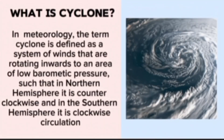What is a cyclone? In meteorology, the term cyclone is defined as a system of winds that are rotating inwards to an area of low barometric pressure, such that in the northern hemisphere it is counterclockwise, and in the southern hemisphere it is clockwise circulation.